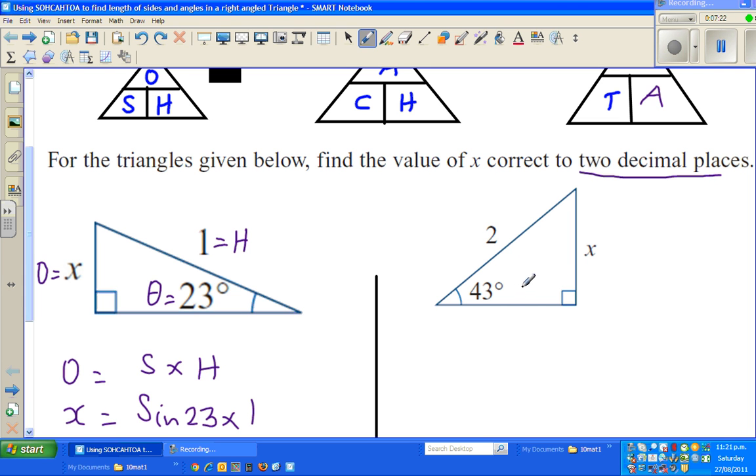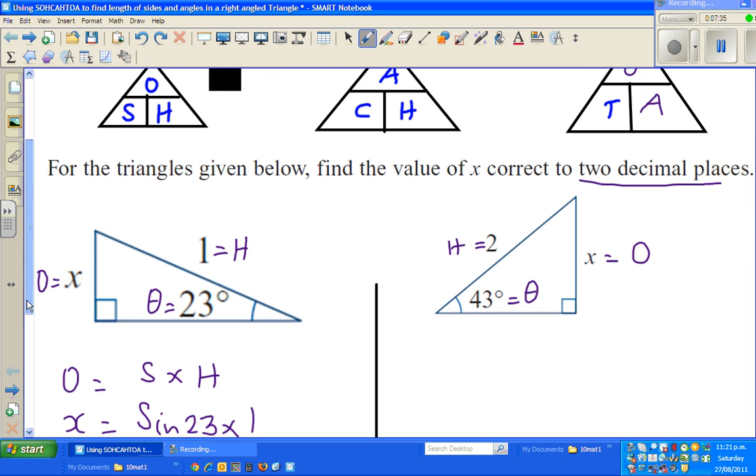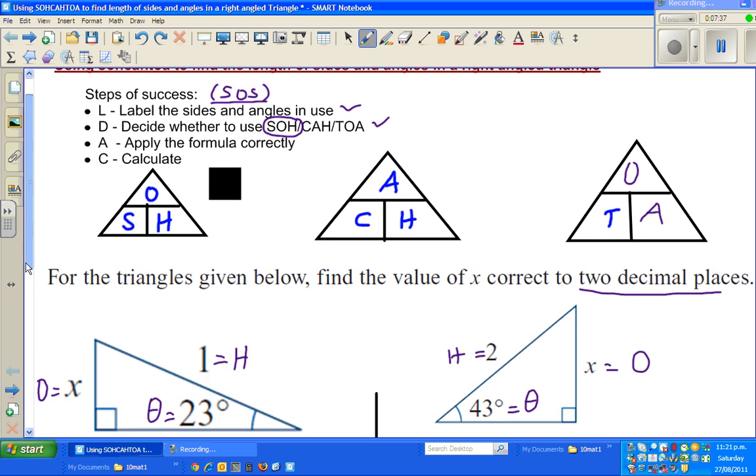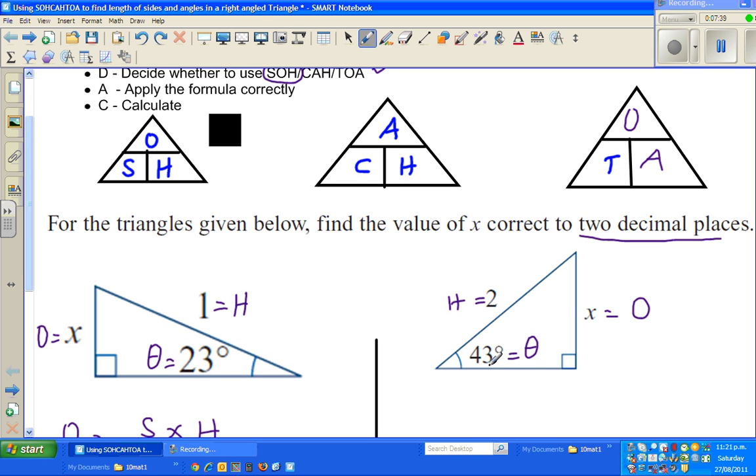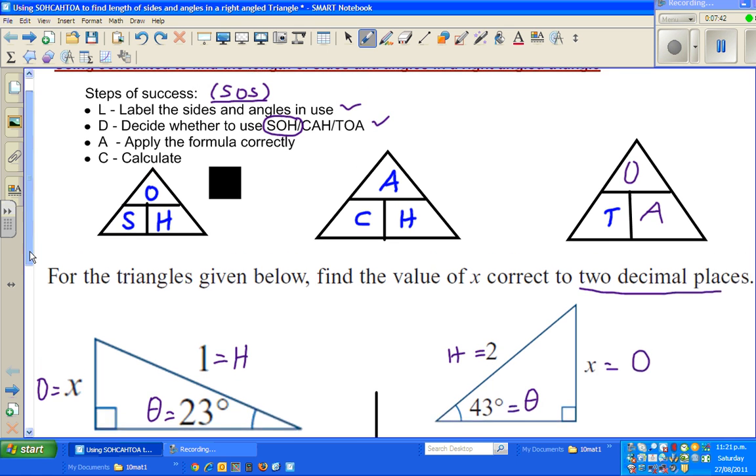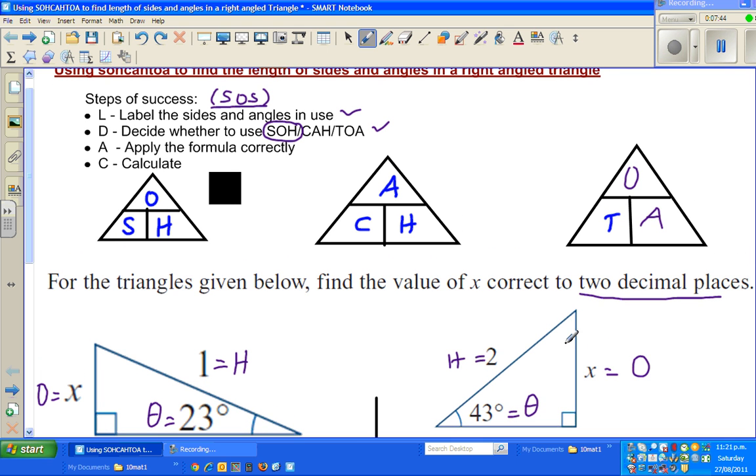Again, this is the angle, so I will name that as theta. So this is your hypotenuse, and this is your opposite. Again, we have to use... We have labeled the sides. Again, I have not labeled this because we are not dealing with that. Now the next is you want to find O.